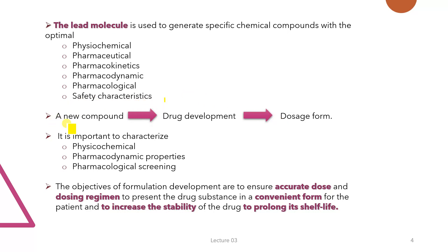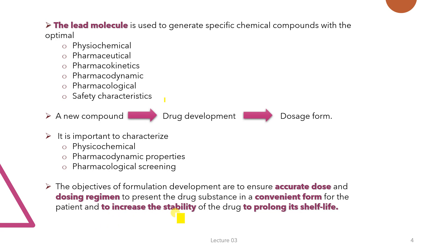A new compound after its identification must undergo the complete procedure of drug development before it can be transformed into a proper dosage form. It is important to characterize the physico-chemical, pharmacodynamic, and pharmacological properties of the new drug substance for the development of a safe and sound dosage form. The objectives of formulation development are to ensure accurate dosage and dosage regimen, to present the drug substance in a convenient form for the patient, and to increase the stability of the drug to prolong its shelf life.